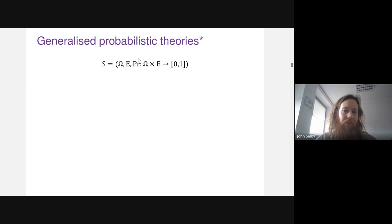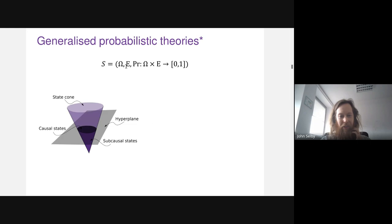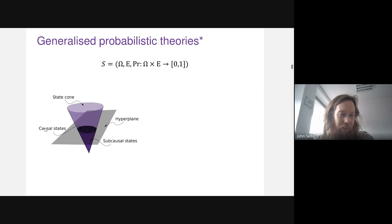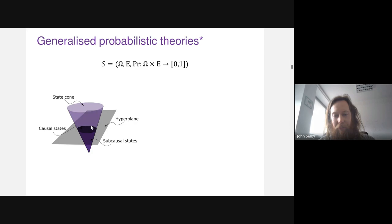There's a bunch of convex geometry that goes with the states and effects. Generically, the state space is defined by taking some convex cone of states living in a real vector space, then defining a hyperplane that characterizes normalization. The intersection of the hyperplane with the cone gives the normalized or causal states. Anything lying between that hyperplane and the origin is sub-normalized, and anything above is super-normalized, but really it's the normalized states that are of primary interest.